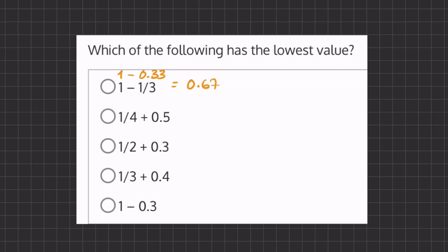Now let's move on to our next one. 1 fourth is like saying 0.25. And if we add that to half, we get 0.75. Let's go to our next one. Half is like saying 0.5. And if we add that to 0.3, we get 0.8.